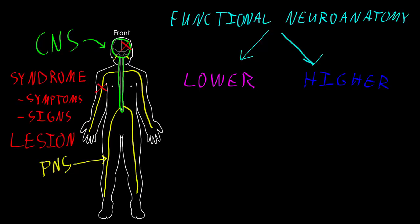For the lower functions of the nervous system — or you could call them the more basic, or the more physical functions — these are carried out by both the central nervous system and the peripheral nervous system. So many parts of the entire nervous system are involved in carrying out these lower neural functions. I like to divide these up into three big groups.